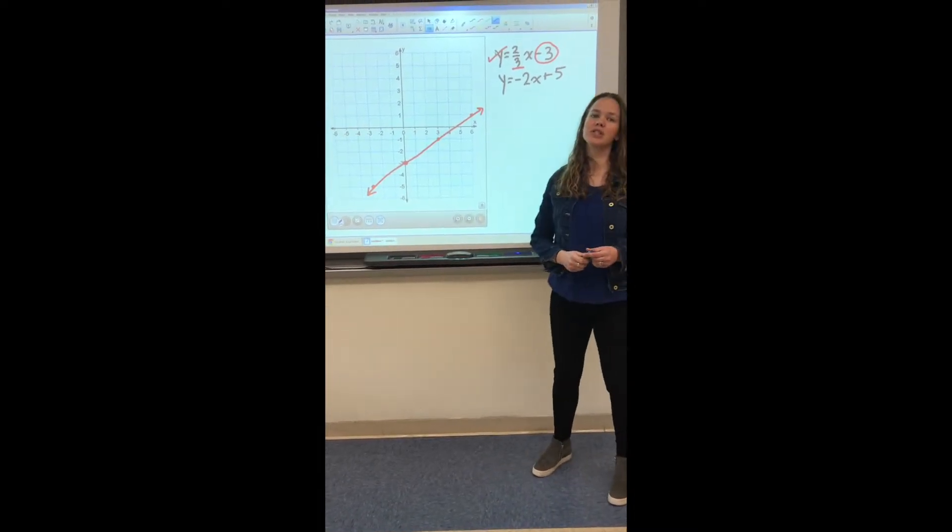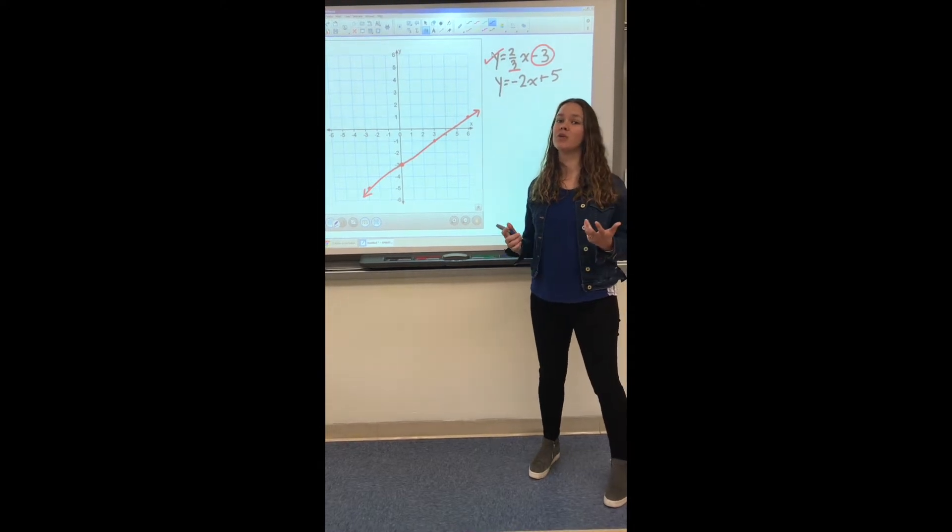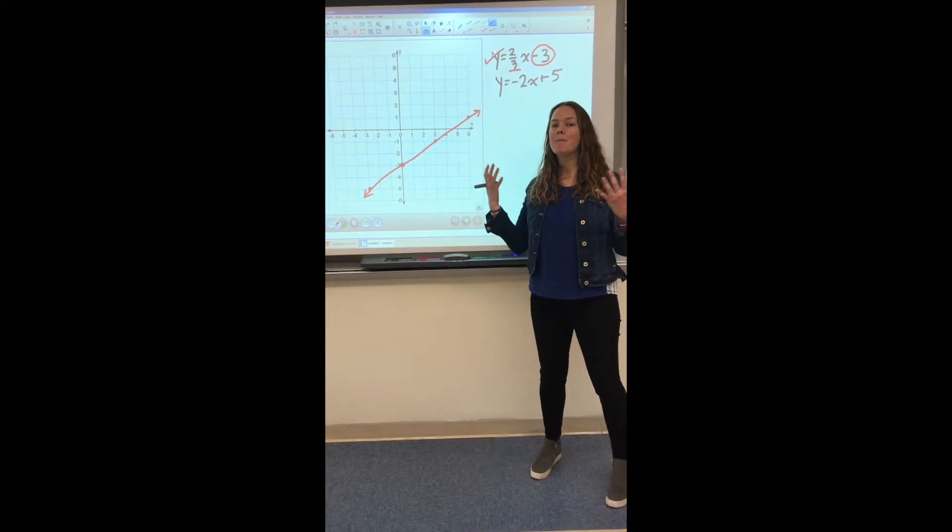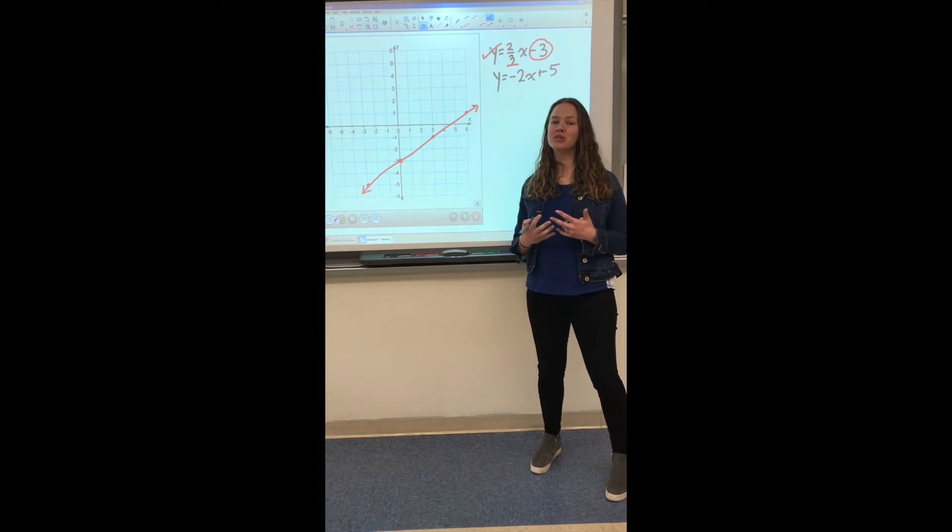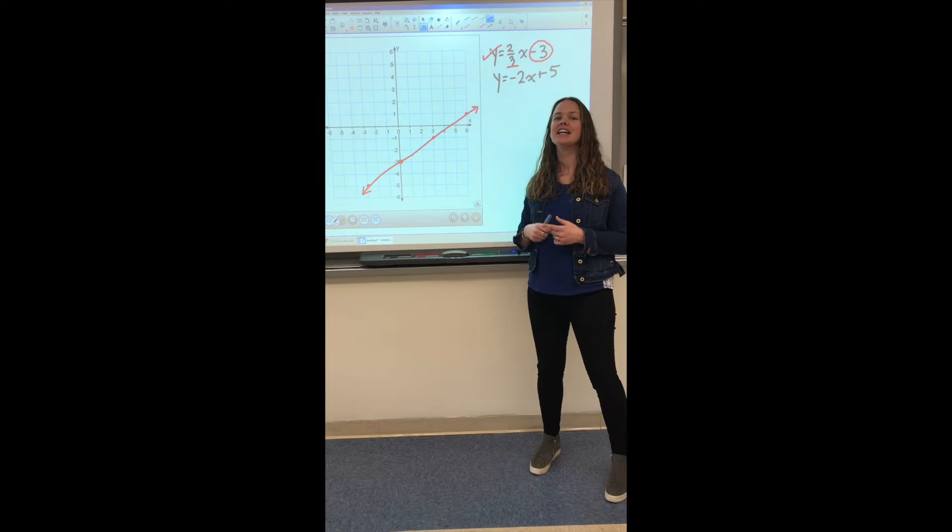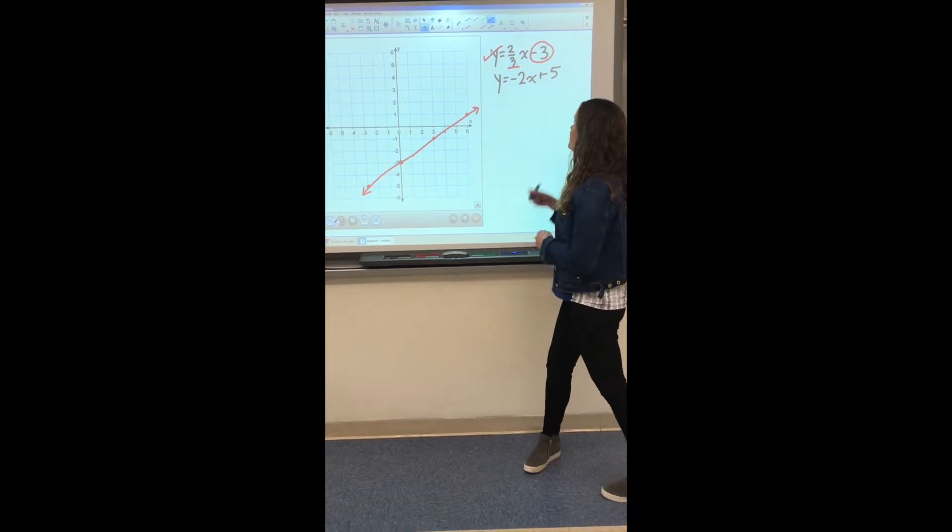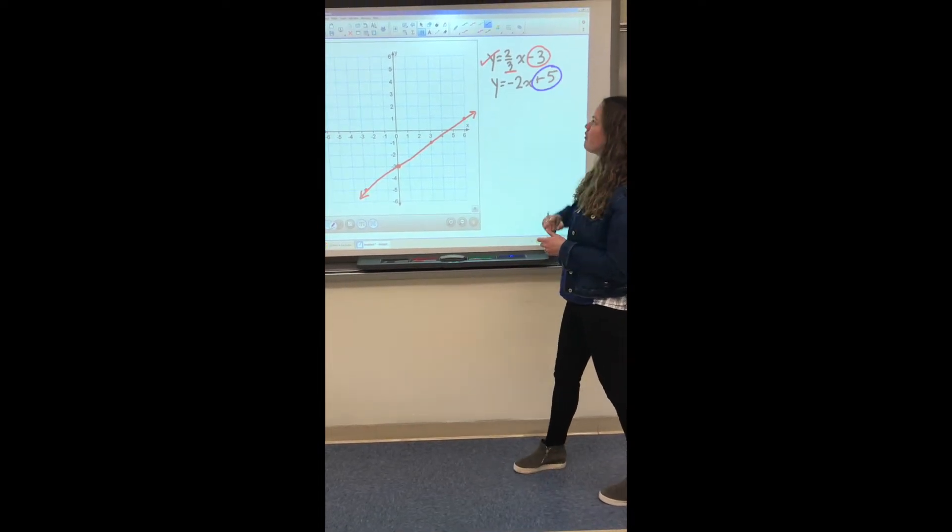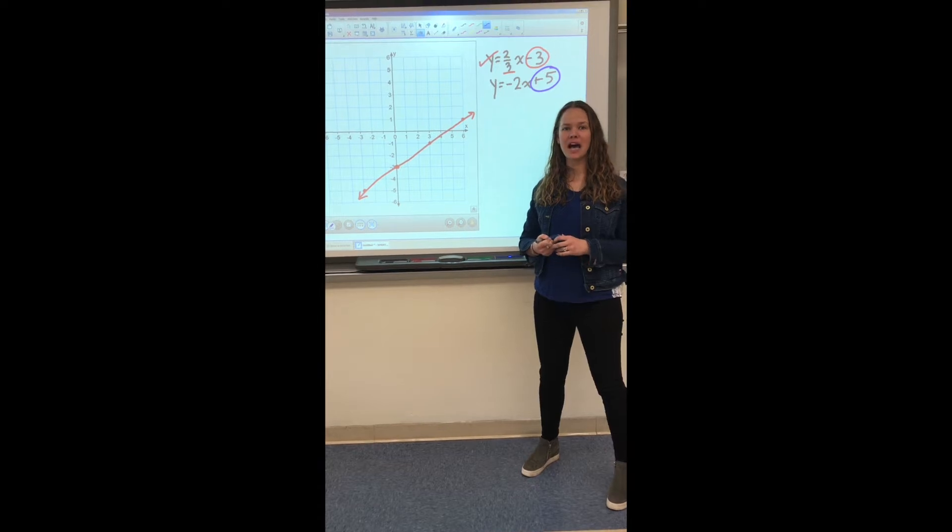Now, to find the actual solution for this system, we are looking for which ordered pair matches or which ordered pair is a solution for both of the equations. So now we just have to graph the second equation to see what they have in common. So again, our second number of a positive 5, that is our y-intercept.